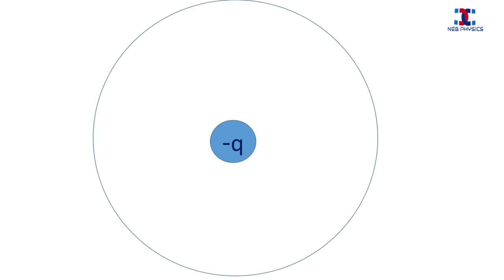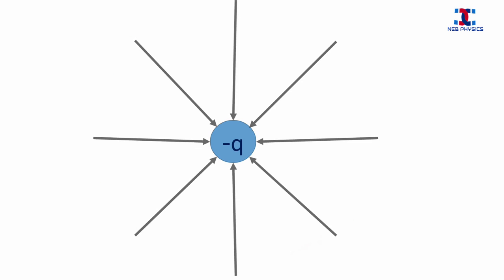Similarly, in the electric field of a negative charge, the test charge will experience force of attraction. During attraction, the test charge will follow a certain path, and all these possible paths that a test charge would follow during attraction are represented by lines with arrowhead, which are also electric lines of force.